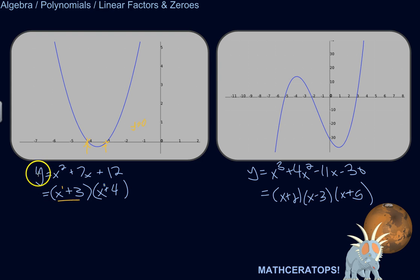And the awesome thing is, I can set y equal to zero, because I want to know when y is zero. And, because something times zero is zero, I can pretend that each one of these is zero and solve.